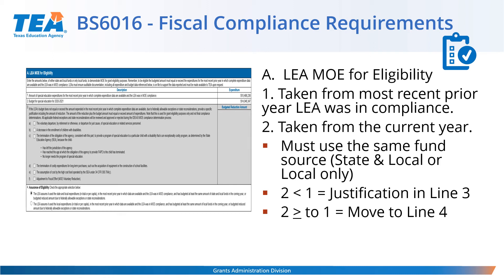In Line 1, enter the amount of state and local special education expenditures from the most recent prior year that the LEA was in MOE compliance. This information may be found on the most recent IDEA-B MOE compliance review report. In Line 2, enter the state and local or local-only special education funds budgeted for the current year. If the district entered state and local expenditures in Line 1, then the district must enter state and local expenditures on Line 2. This schedule does not record federal funds — only state and local or local funds expended.